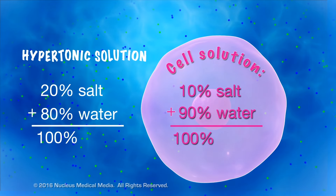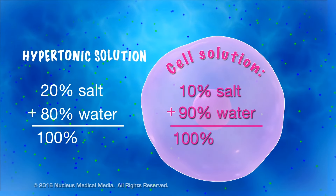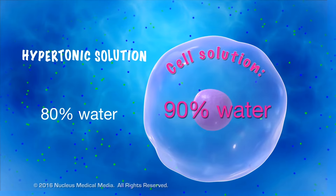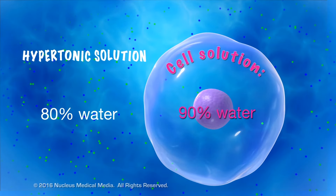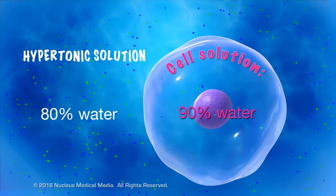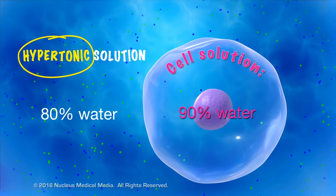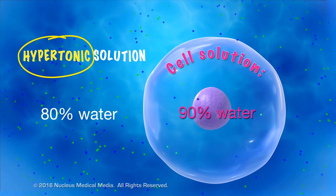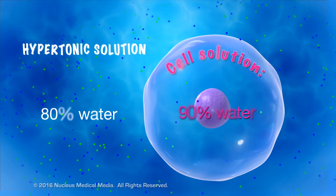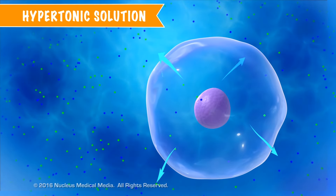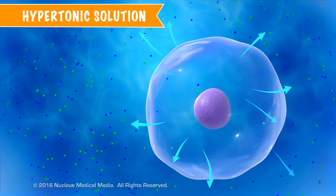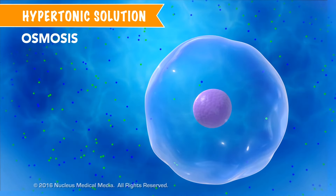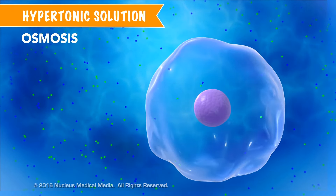You can see that there's a greater concentration of water inside the cell than outside — 90% compared to 80%. We call a solution hypertonic when its concentration of water is lower than inside the cell, and its concentration of solute is higher than inside the cell. As a result, water molecules diffuse out of the cell through osmosis, causing the cell to shrivel a bit.